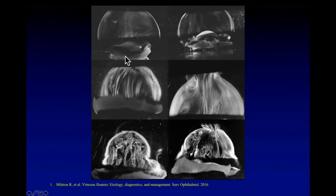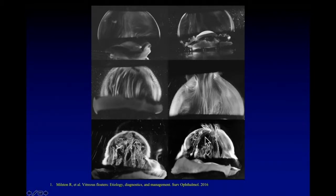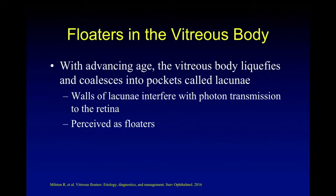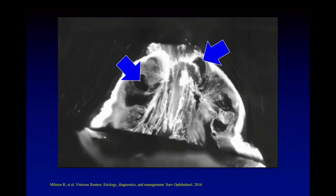In a very young age, the vitreous is formed and more consistent. As we become adults, we see some fibers, and as we get older, lacunae form in the vitreous and vitreous fibers become more prominent. These lacunae are where fluids sometimes accumulate, and we see floaters. Floaters are what we see in the vitreous body as it liquefies, and pockets of fluid called lacunae form. The walls of lacunae interfere with photon transmission, and then we see floaters after the eye moves. Examples of those lacunae are seen with blue arrows in the vitreous of an older person.